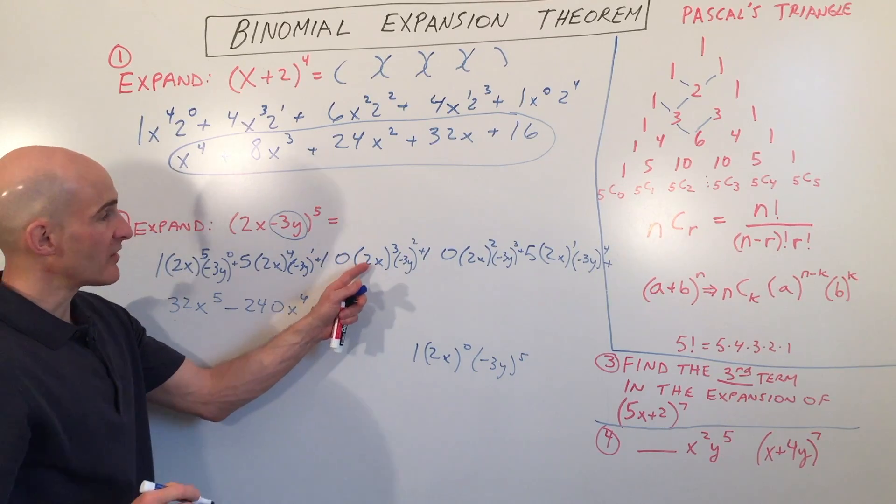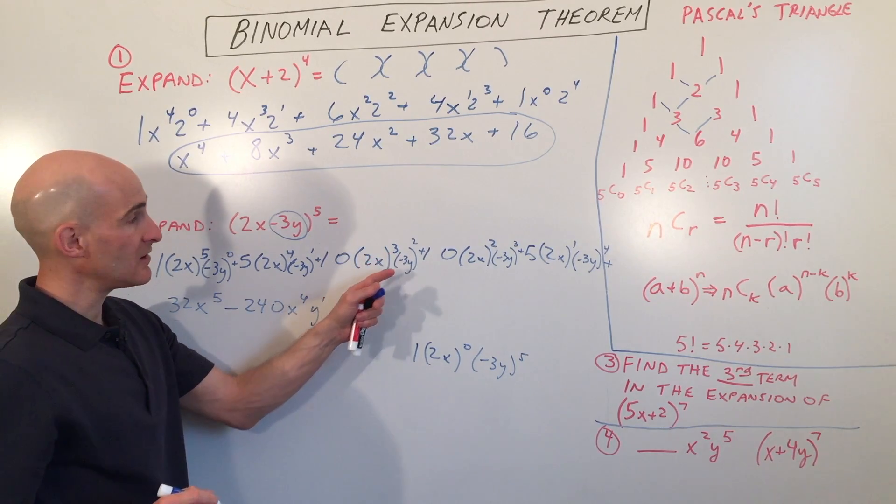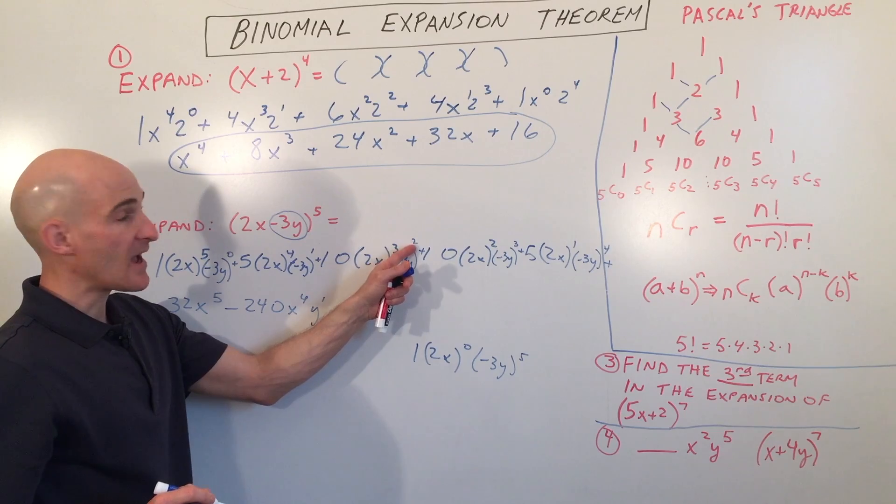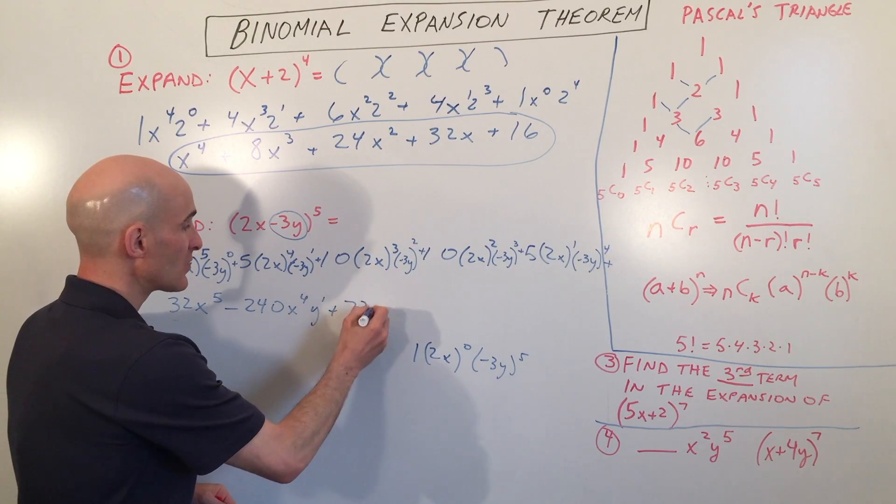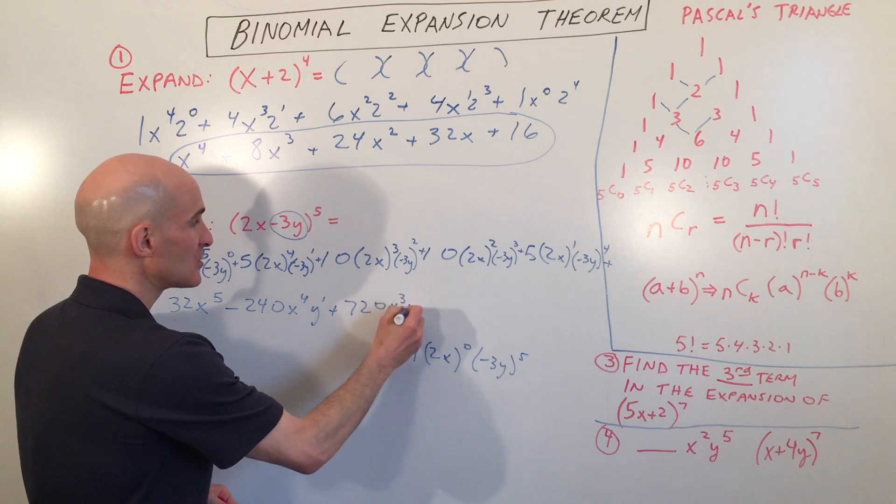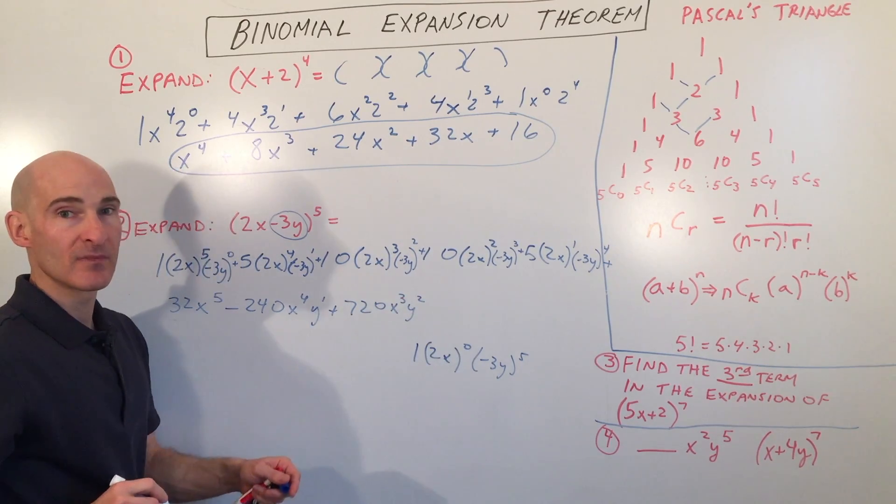If we go to the next term, we've got 2 cubed, which is 8, negative 3 squared is 9. So 8 times 9 is 72, times 10 is 720. So we have 720x cubed, y squared.